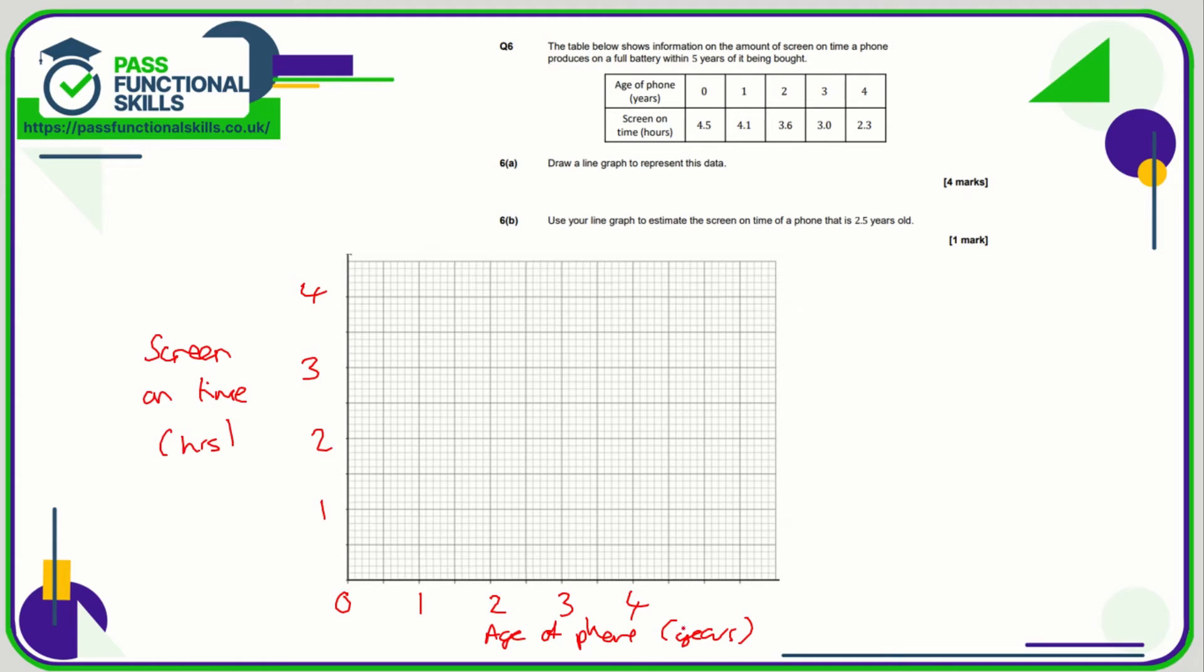A phone that is 0 years old has a screen on time of 4.5 hours. So 0, 4.5, make an X there. 1, 4.1. 2 goes to 3.6. 3 goes to 3. And 4 goes to 2.3, so 2, 2.1, 2.2, 2.3. Now all I need to do is, with a ruler, just draw a line from point to point, like so. There is our line graph.